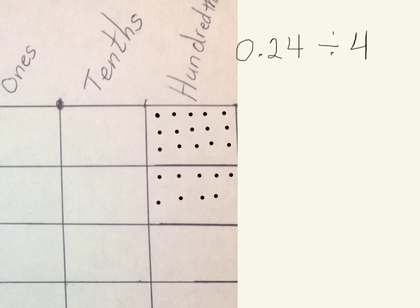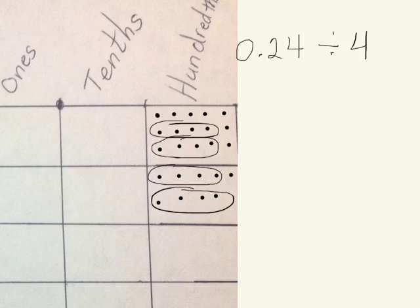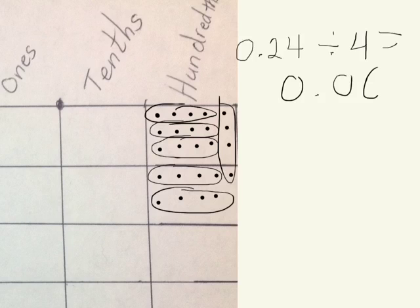So we're naming it in unit form. I have one set of 4, another set of 4, another set of 4, another, another, and finally one right here. I have 6 sets of 4. 24 hundredths divided by 4 is 6 hundredths.